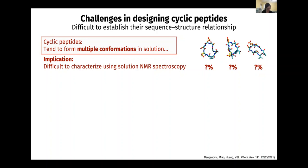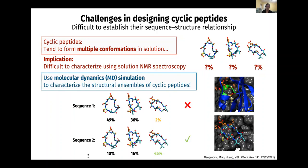Since we mentioned molecular dynamics simulation, you might think: why don't you just run the simulation? For sequence number one, you watch it for a day and you can tell how many percent adopt what structure. Then I can look at the structure ensemble and decide — only 2% of the ensemble has the SESE residues pointing in the direction I want. If I change the sequence, you run simulation again, and this time 45% of the frames have SESE pointing in the direction I want. So sequence two should be better than sequence one.